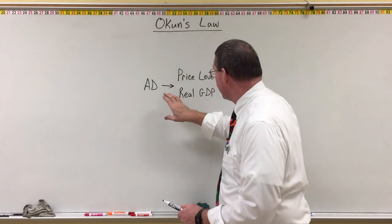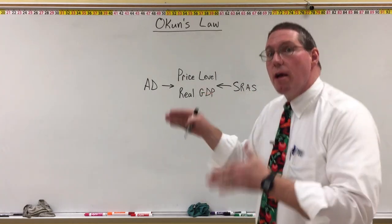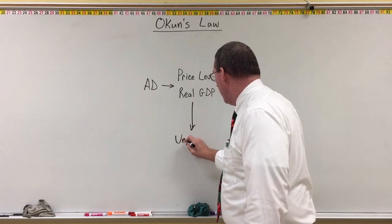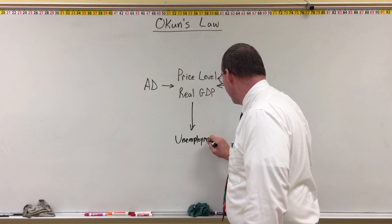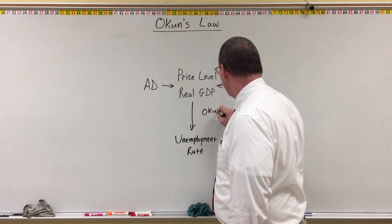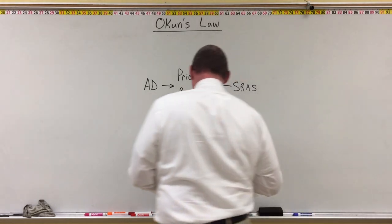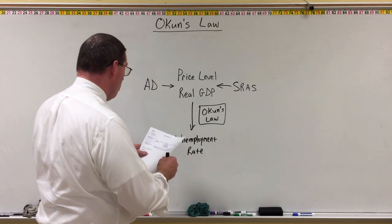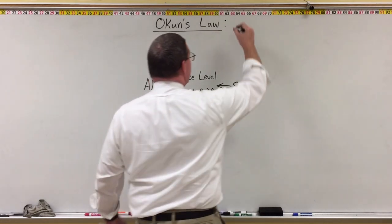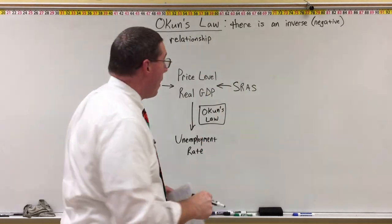The basic idea of Okun's Law says that there is a relationship between the unemployment rate and real GDP in the economy. Even though we can only see a direct effect on price level and real GDP when there's a change in aggregate demand or short-run aggregate supply, there is then subsequently an indirect effect on the unemployment rate after real GDP changes. Okun's Law basically states there is an inverse or negative relationship between real GDP and the unemployment rate.